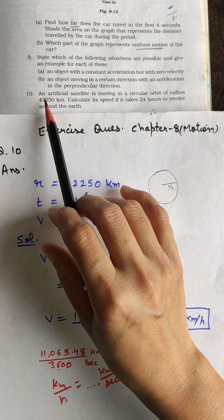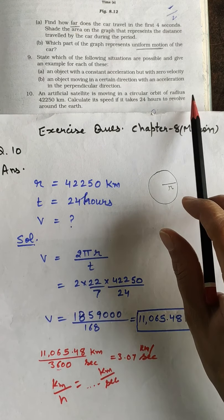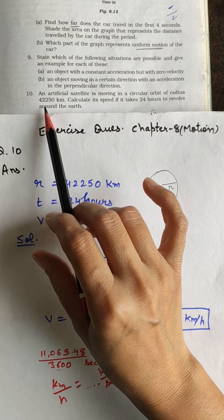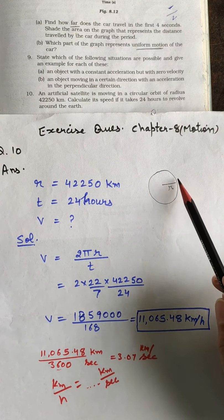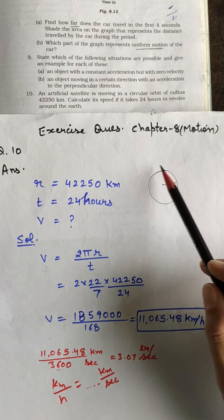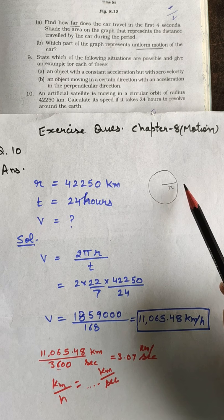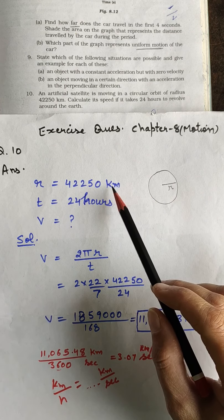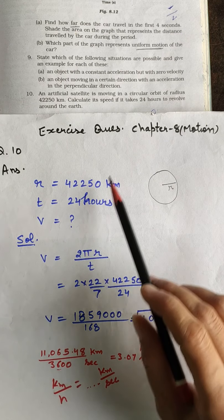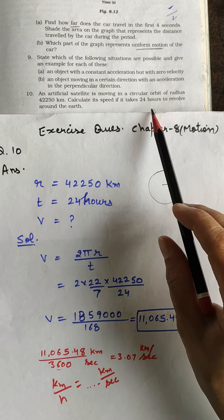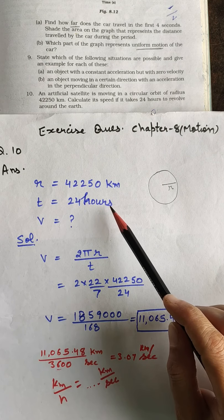Question number 10: An artificial satellite is moving in a circular orbit of radius 42,250 km. This is a circular path and its radius is 42,250 km. It is given to us calculate speed. If it takes 24 hours to revolve around the earth, T is 24 hours.